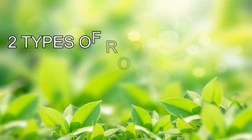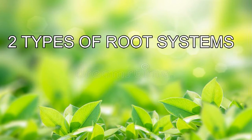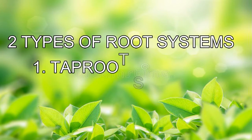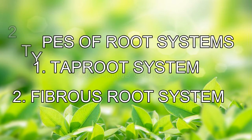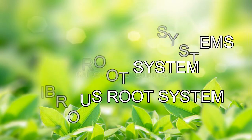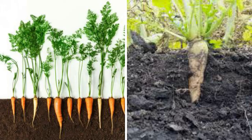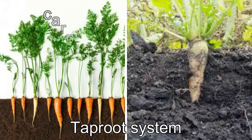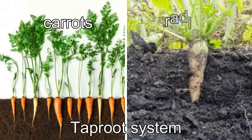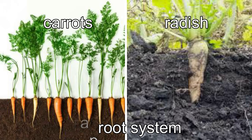Types of root systems: there are two types of root systems, the taproot system and the fibrous root system. Some plants have a large and well-developed primary root that grows deep into the soil. This is called the taproot system. In some plants like carrots and radish, the taproot becomes thick and fleshy due to stored materials.